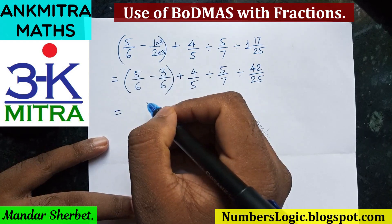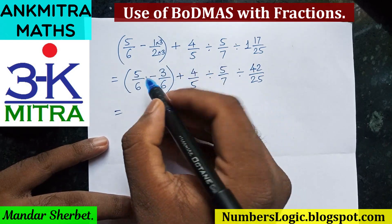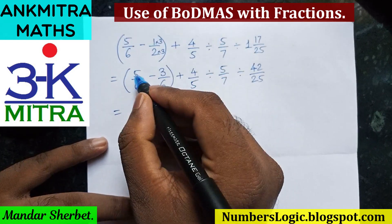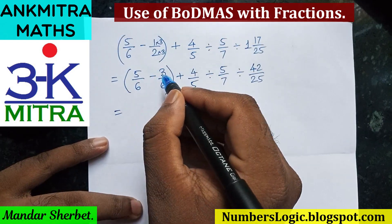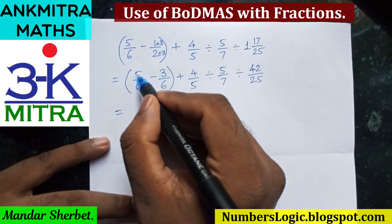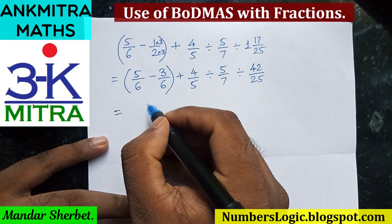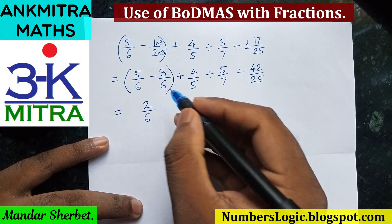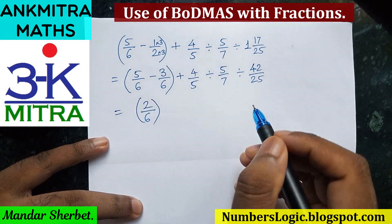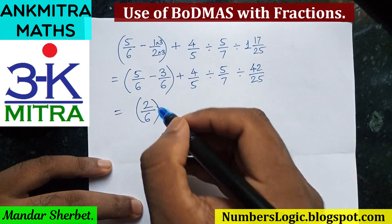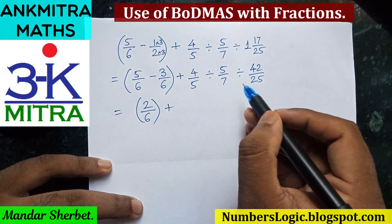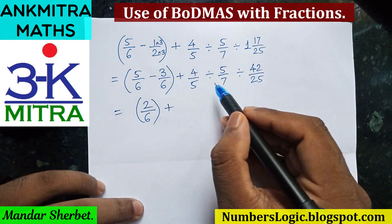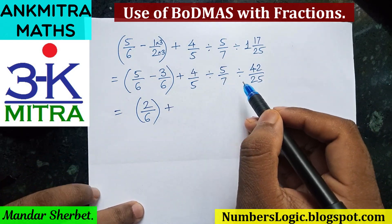The bracket is now almost solved. Since the denominators are equal, we subtract the numerators: five minus three is two, giving us two upon six as the answer for the bracket. The plus sign remains as it is, and now we address the three fractions with division signs in between.